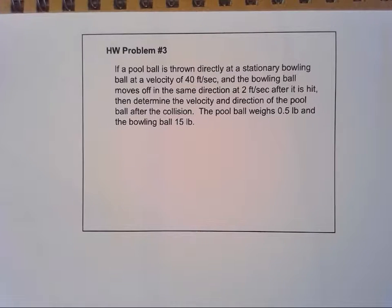Okay, on to homework problem three. We are going to start in our collisions now. If a pool ball is thrown directly at a stationary bowling ball at a velocity of 40 feet per second and the bowling ball moves off in the same direction at 2 feet per second after it is hit, then determine the velocity and direction of the pool ball after the collision. The pool ball weighs 0.5 pounds and the bowling ball 15 pounds.